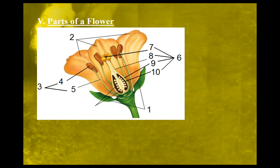I have an illustration of a plant where I have a bunch of different parts of the plant that are numbered — 1 through 10. I'm going to go through the different parts, identify the name of each part, talk a little bit about what it might look like, and then describe the function of that part of the plant. Let's start off with the sepal.